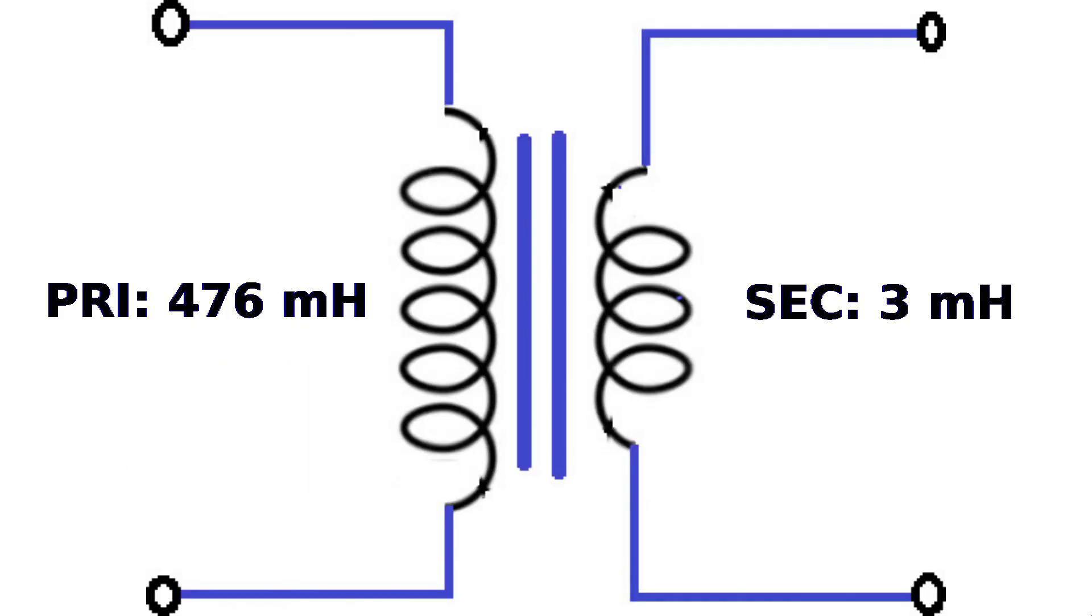The final report shows the inductances of both coils, with the primary winding having a much higher inductance due to the greater number of wire turns.